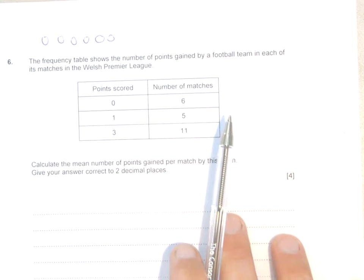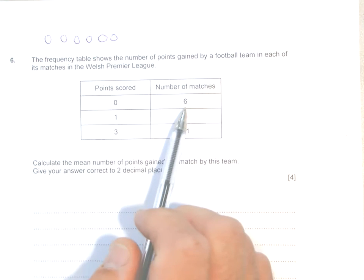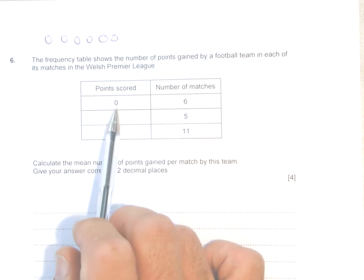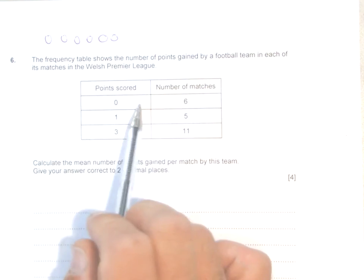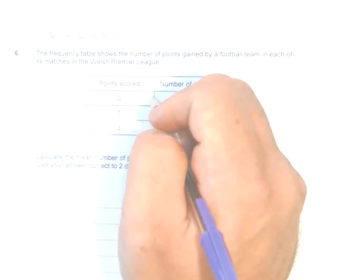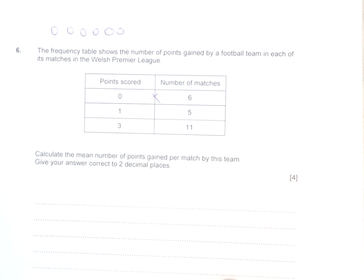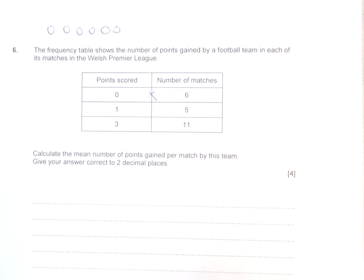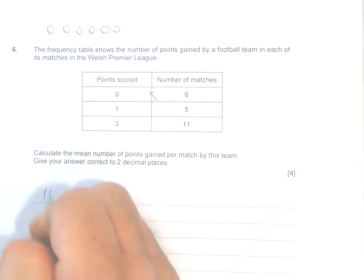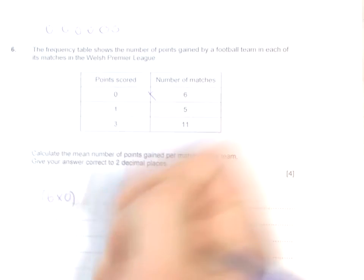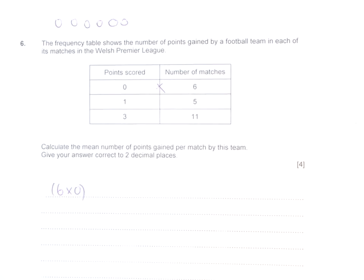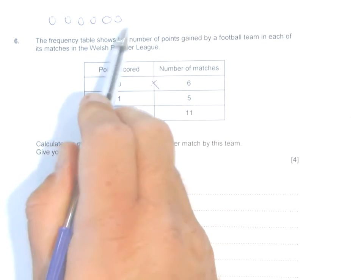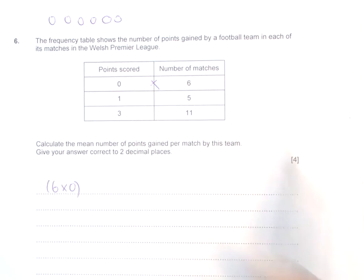I would look at the table and start with: we've got six matches where zero points have been scored, so we need to multiply these values together because you've got six lots of zero. So 6 × 0, and of course that will become zero.